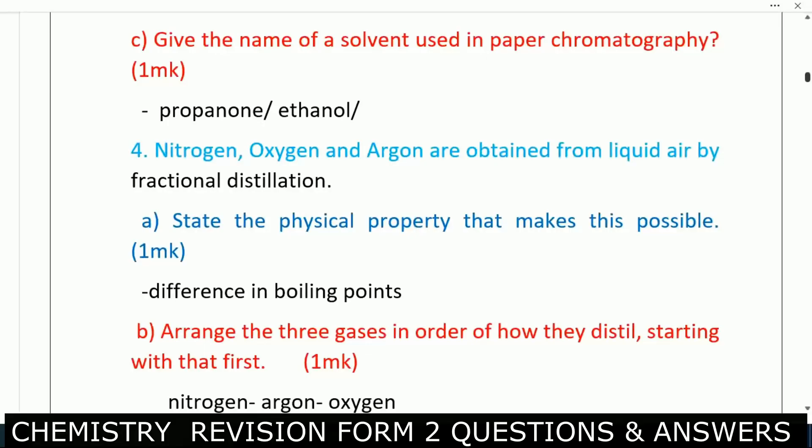Number four: nitrogen, oxygen, and argon are obtained from liquid air by fractional distillation — that is how you obtain those gases. Next, state the physical property that makes it possible to separate those gases. They have different boiling points — that is how you can separate them.